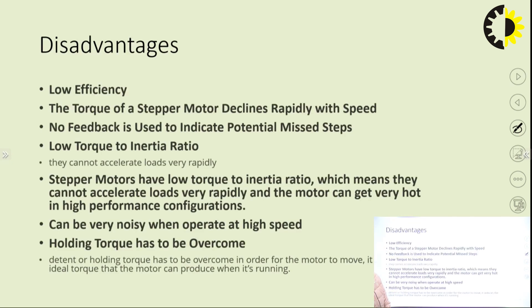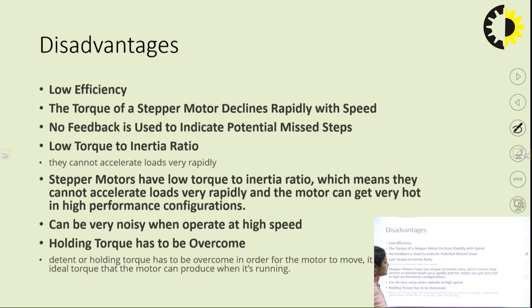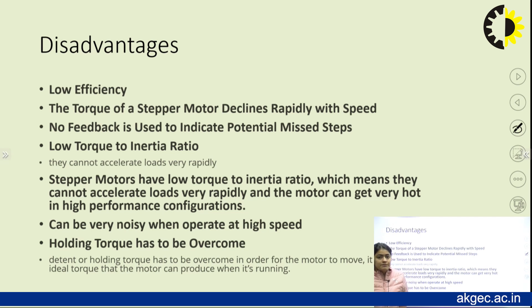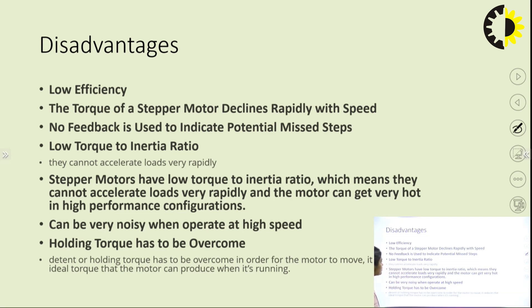These are some disadvantages or demerits of the stepper motor. It has lower efficiency, and as the speed increases the torque of the stepper motor declines rapidly. No feedback is used to indicate potential missteps, so some steps can be missed. If feedback is used it will give more precise results. Low efficiency and rapidly declining torque with speed are key disadvantages.